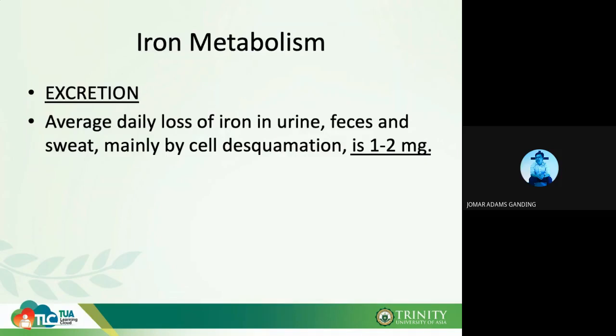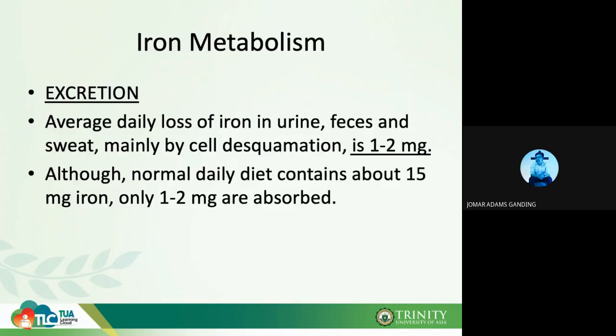Normal dietary intake contains about 15 milligrams of iron, but only one to two milligrams are actually absorbed by the body. This is closely monitored by hepcidin — once the one to two milligrams threshold is reached, hepcidin will be produced, therefore stopping further absorption of iron. Hepcidin is a hormone that blocks absorption of iron.